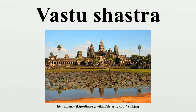Silpa Prakasa provides a brief introduction to 12 types of Hindu temples. Other texts, such as Pancaratra Prasada Prasadhana compiled by Daniel Smith and Silpa Ratnakara, provide a more extensive list of Hindu temple types. Ancient Sanskrit manuals for temple construction discovered in Rajasthan in northwestern India include Sutradhara Mandana's Prasada Mandana with chapters on town building, Manasara Shilpa and Mayamata.